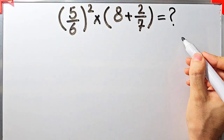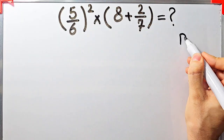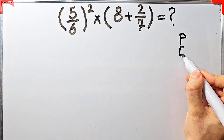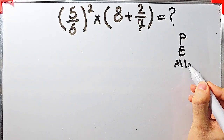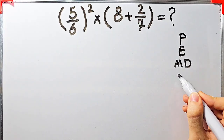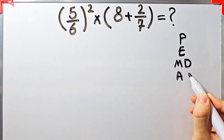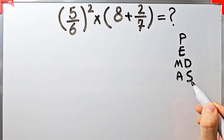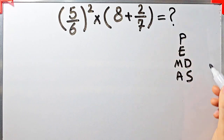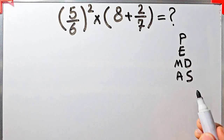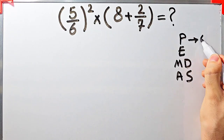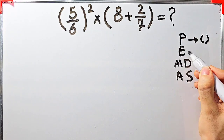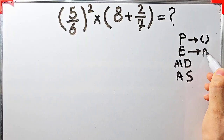To solve this question we need to follow the order of operations, which is PEMDAS. PEMDAS shows the priority of the mathematical operations, and if you don't pay attention to this rule you get the wrong answer. In this rule, P stands for parentheses and E stands for exponent.